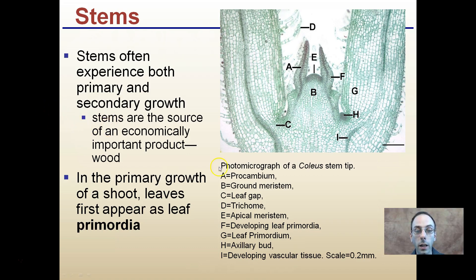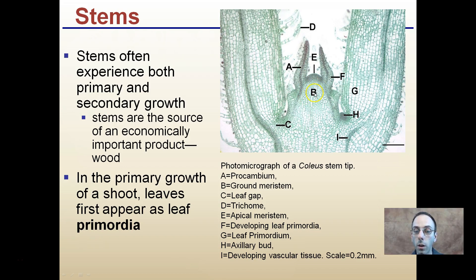Stems are the source of the economically important product called wood. In the primary growth of a shoot, leaves first appear as primordia. I'm not going to quiz you on all the individual terms here, but it's worth putting up a good picture to describe some of them. The leaf primordium here is G, where leaves are initiating. The highest rate of cell division is at E — that's the apical meristem. B is the ground meristem, and C is the leaf gap. Just familiarize yourself with this microscopic look at a stem.